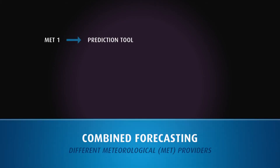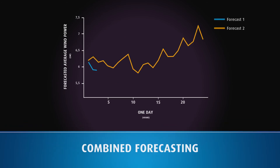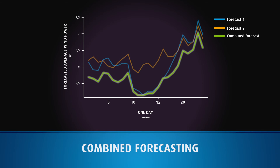A number of power forecasts can be weighted together to form a so-called combined forecast, which is better than the individual forecasts. The combined forecast can be obtained using parallel configurations of the forecasting tool using input from different meteorological forecast providers. By using two to three different meteorological providers, we often see 10 to 15 percent improvements in the forecasting accuracy.